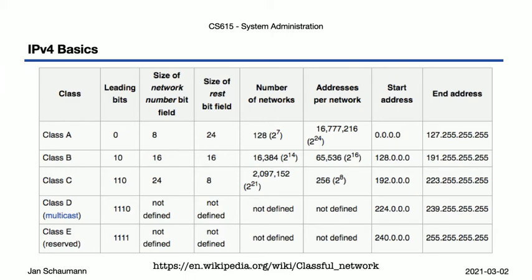If the first two bits were 1 and 0, then you had a class B network with 16 bits of network portion and 16 bits for the host portion. If the first three bits were 1, 1, and 0, then you had a class C network with 24 bits of network and 8 bits host portion. We also have class D and E networks: class D is reserved for multicast addresses, and class E was reserved just in case. IPv4 was intended to be an experiment, so a chunk of addresses was reserved for future use as the class E network.